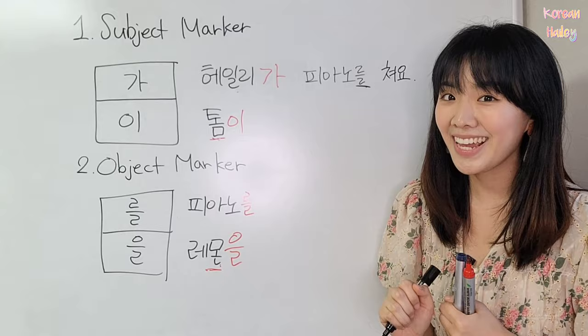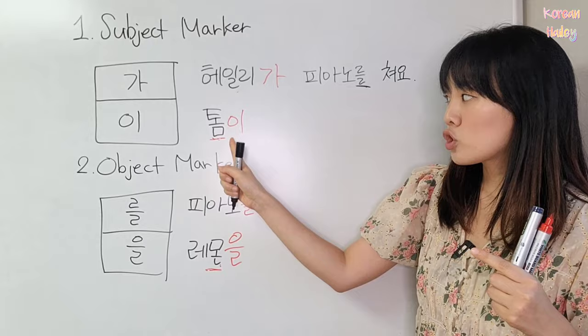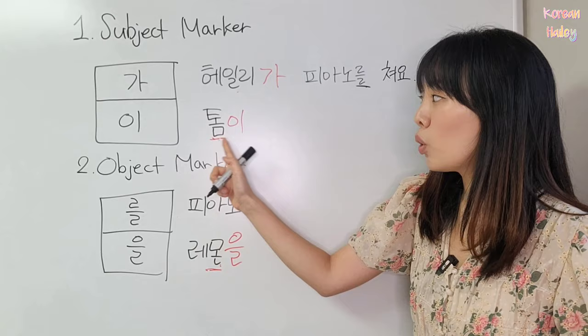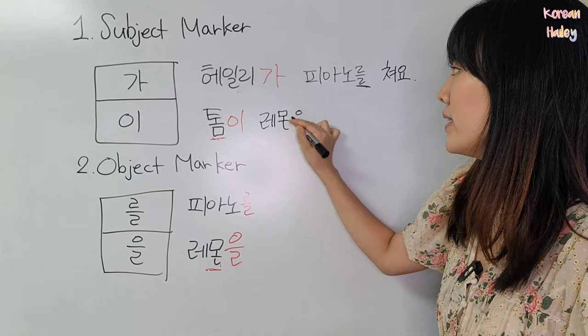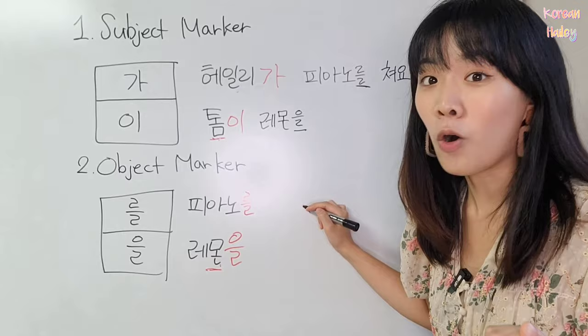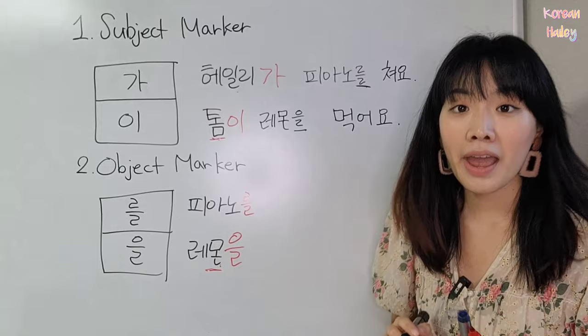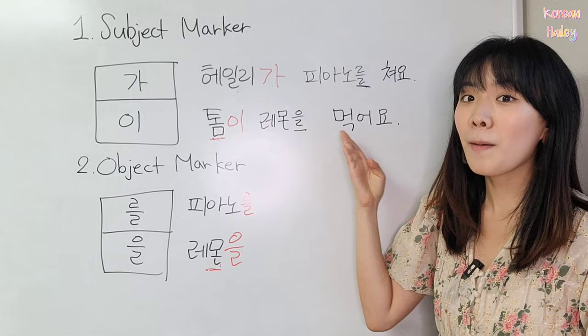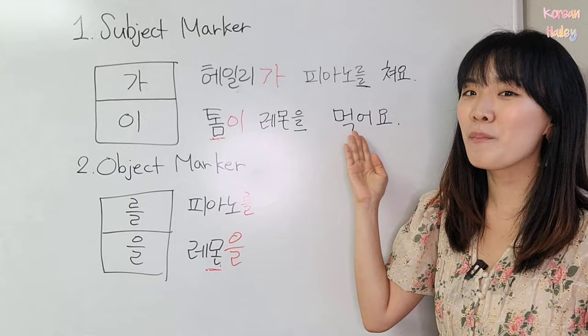The second sentence: 'Tom eats lemon.' 톰이 레몬을, and 'eat' is 먹어요. So it becomes 톰이 레몬을 먹어요. One more time: 톰이 레몬을 먹어요. Very good — now you know the subject marker and object marker and can make sentences.